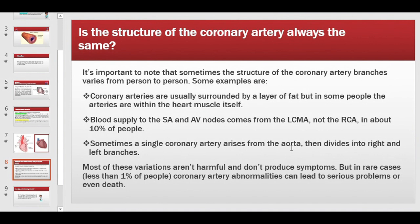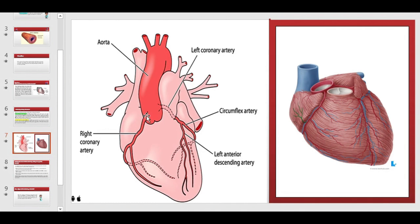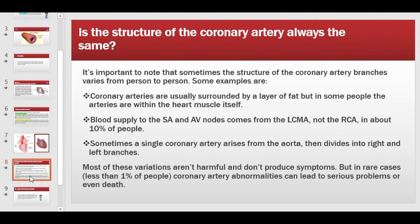Sometimes a single coronary artery arises from the aorta and then divides into the right and left branches, rather than having two separate origins. This is still not problematic unless it interferes with blood supply. Most of these variations are not harmful and don't produce symptoms. However, in rare cases — less than 1% of people — coronary artery abnormalities can lead to serious problems and even death, such as myocardial infarction, which is also known as a heart attack.